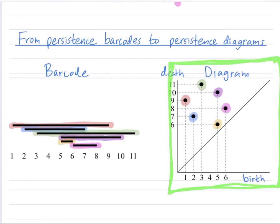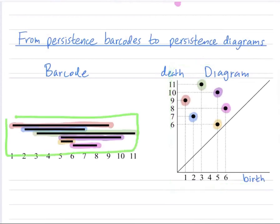Also, I think when you talk about the bottleneck distance or the Wasserstein distance between persistent homology, people often use diagrams to describe that, although you can describe that using barcodes.